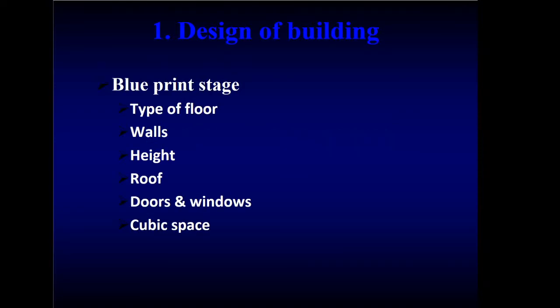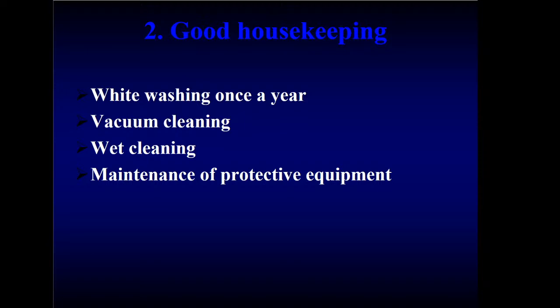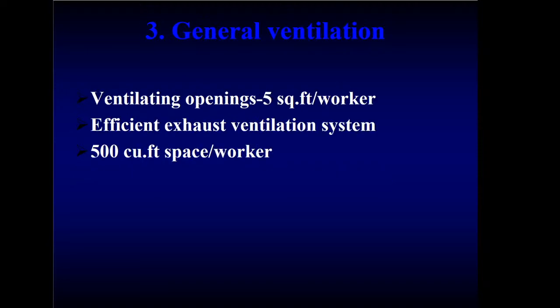Engineering measures are very important. First is the design of the whole factory — the blueprint, type of walls, floor, height, roof, doors, windows, cubic space — everything must be properly designed. Second is good housekeeping: ensuring all items are in the correct place, no dust accumulation, done via whitewashing once a year, vacuum cleaning, wet cleaning, and maintenance of protective equipment. Good ventilation and efficient exhaust ventilation is also very important to get rid of dusts.